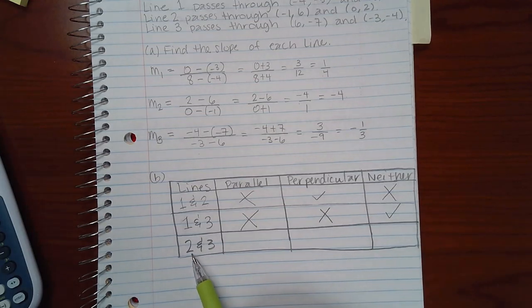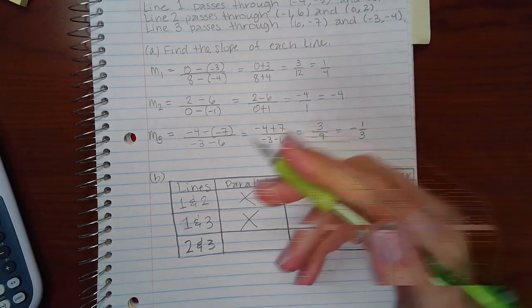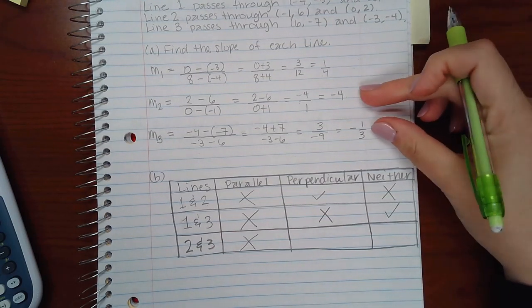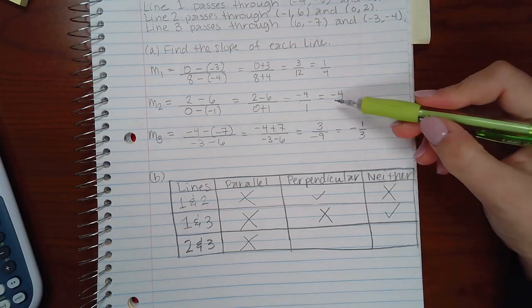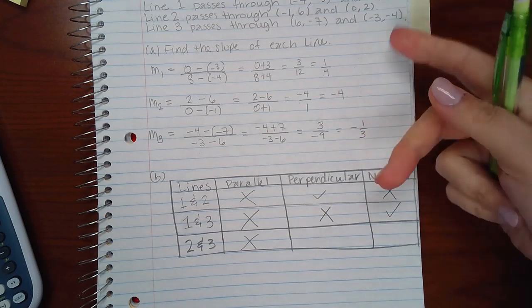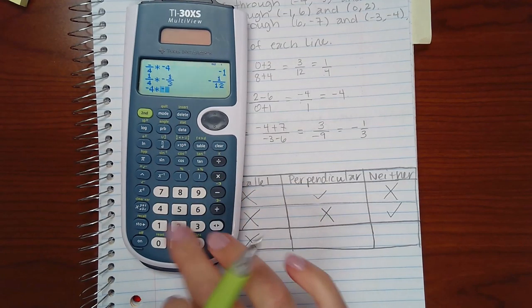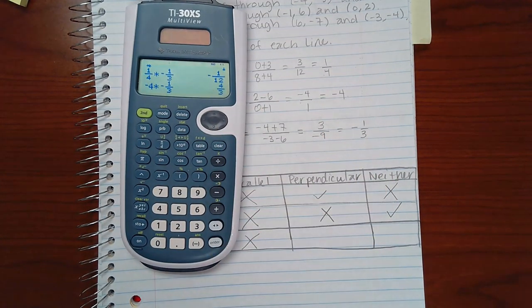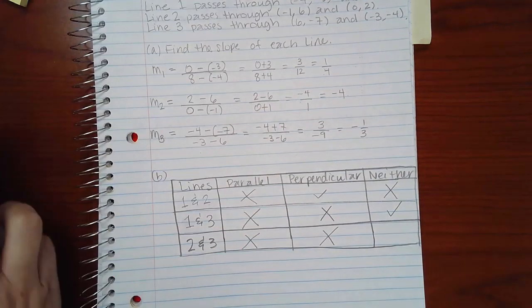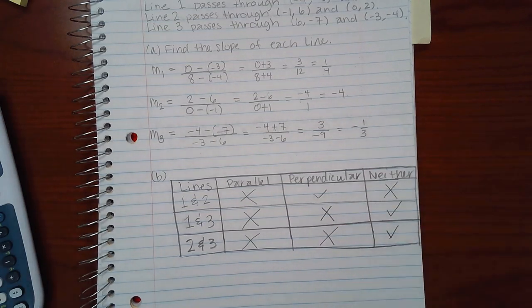Now we're going to compare two and three. Again, these two slopes are not the same, so they are not parallel lines. And these slopes are not opposite reciprocals of one another. They're not even opposite. This is negative and so is this. So they're not even opposite signs, much less reciprocals of one another. And you can also verify using the second idea that if you multiply the two slopes together, we do not get negative one. Therefore, they are not perpendicular. And if they're not parallel and they're not perpendicular, then you would select neither.